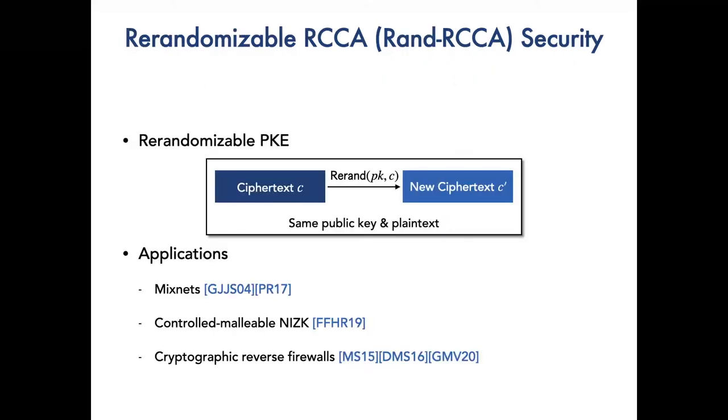Such a relaxation induces PKE with desirable features. Randomizable RCCA security is one of them. We say a PKE scheme is randomizable if there exists an efficient algorithm re-rand that takes as input public key pk and the ciphertext C and outputs a new ciphertext C' of same public key and plaintext. If the randomization does not need public key, then we say this PKE is universally randomizable.